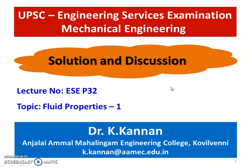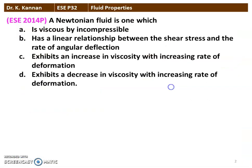In Fluid Mechanics, we take the first chapter, Fluid Properties. The first question from the 2014 question paper: a Newtonian Fluid is one which (a) is viscous but incompressible, (b) has linear relationship between shear stress and the rate of angular deflection, (c) exhibits an increase in viscosity with increasing rate of deformation, (d) exhibits a decrease in viscosity with increasing rate of deformation. The correct answer is: has linear relationship between shear stress and the rate of angular deflection.